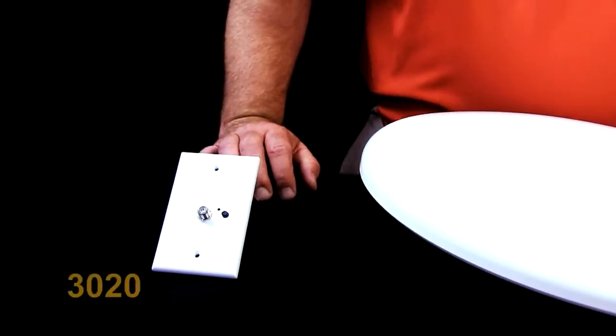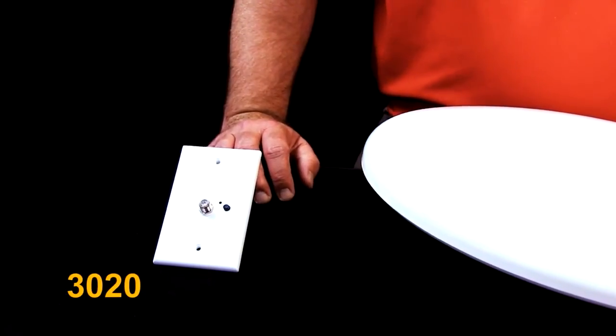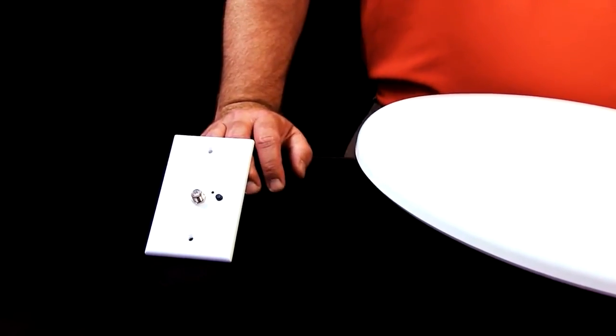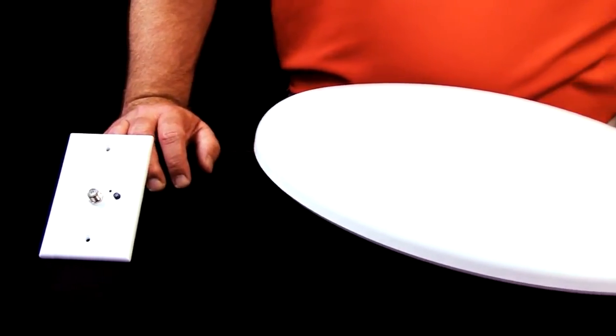The first antenna we're going to talk about is the 3020, which is a brand new antenna for us. This antenna is going to be used for short to medium range reception, depending on conditions.